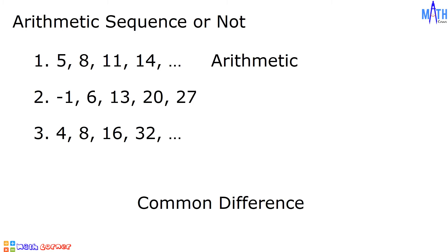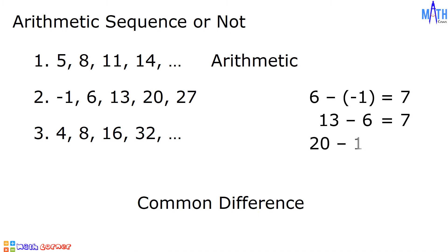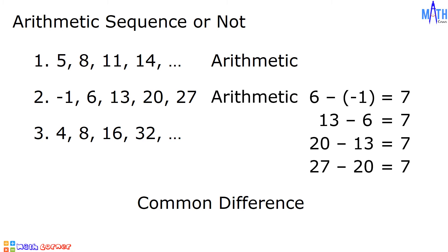In number 2, we have negative 1, 6, 13, 20, and 27. 6 minus negative 1 is equal to 7. 13 minus 6 is equal to 7. 20 minus 13 is equal to 7. Since there is a common difference, it is also an arithmetic sequence.